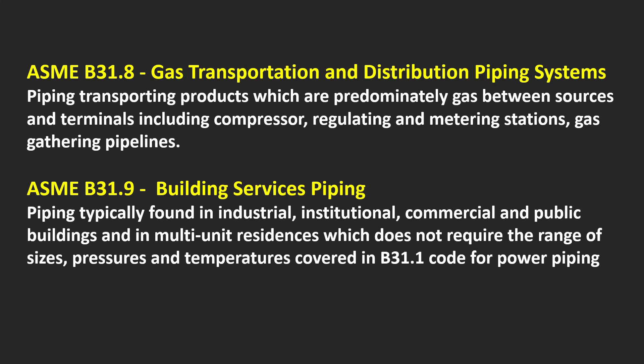ASME B31.9 covers Building Services Piping — piping typically found in industrial, institutional, commercial, and public buildings and in multi-unit residences which does not require the range of sizes, pressures, and temperatures covered in B31.1 for Power Piping.